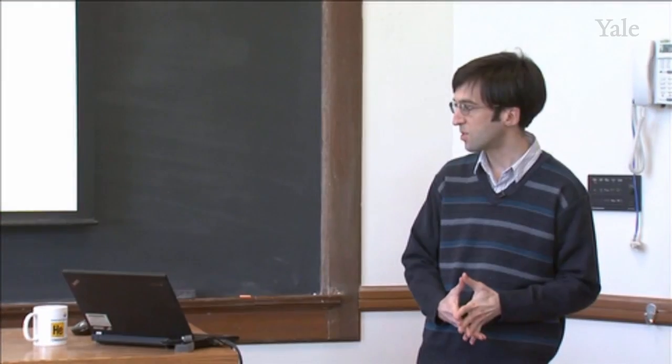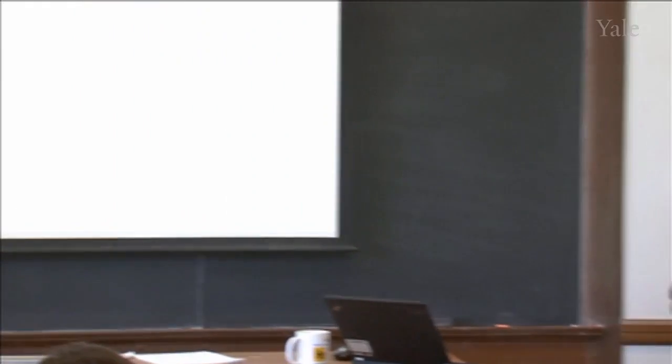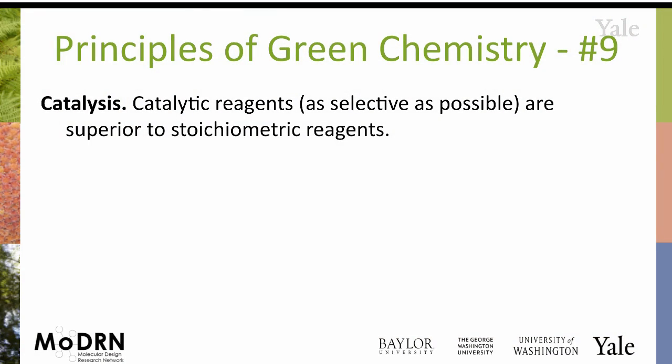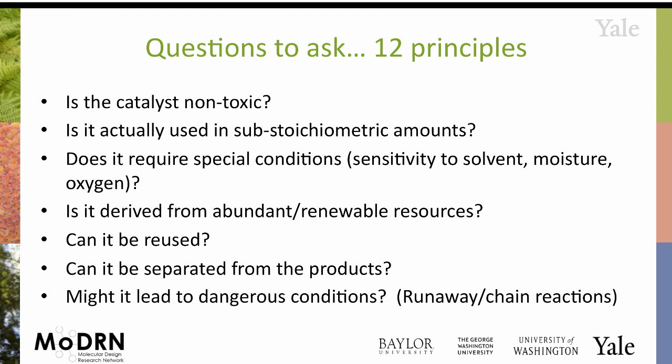To get started on catalysis — it's one of the principles of green chemistry, way down there at number nine. There are clearly a lot of benefits that can come from it, and the wording of the principle is pretty careful. We'll come back to the selectivity issue in a minute because that's pretty important. To figure out whether your process is really green based on the catalyst, you would want to start out looking at the 12 principles, just go down the list one through twelve.